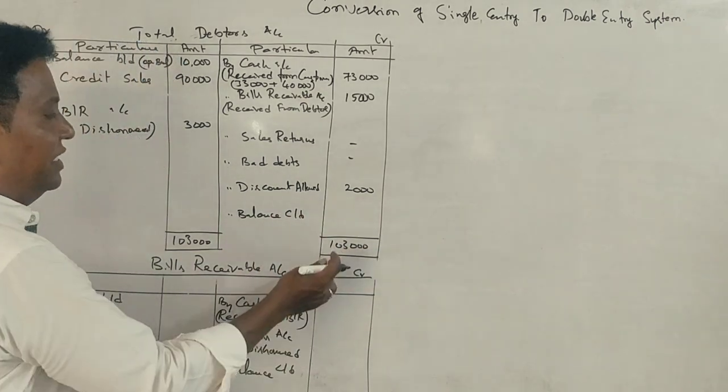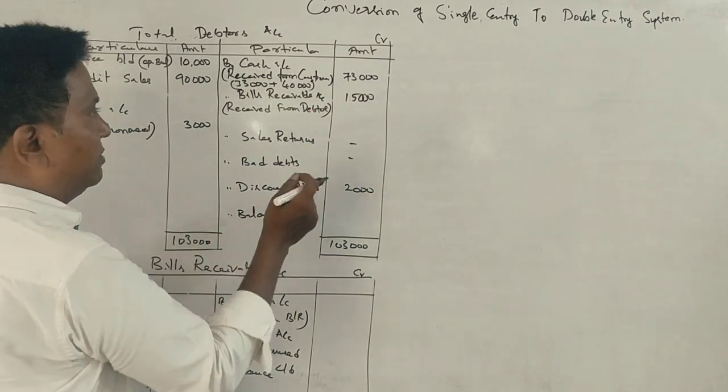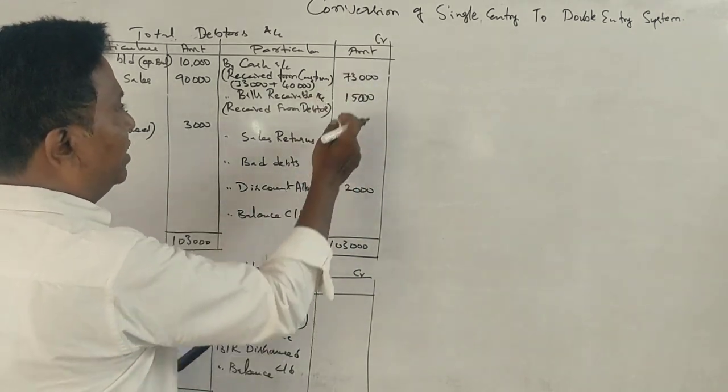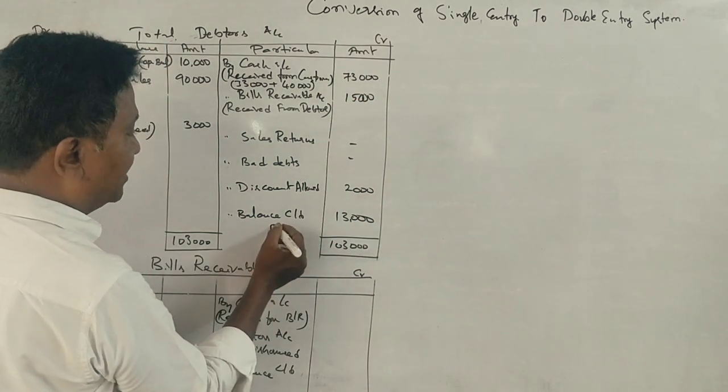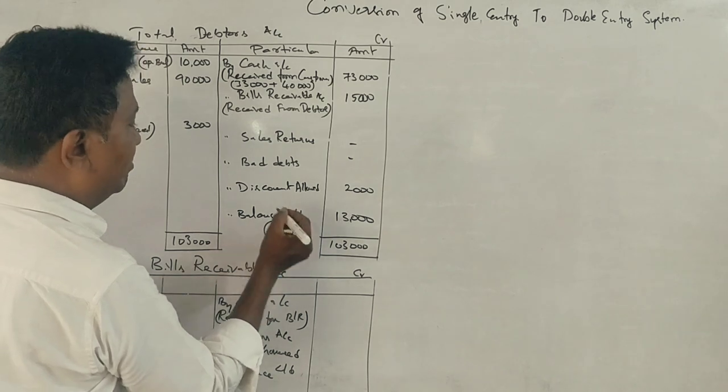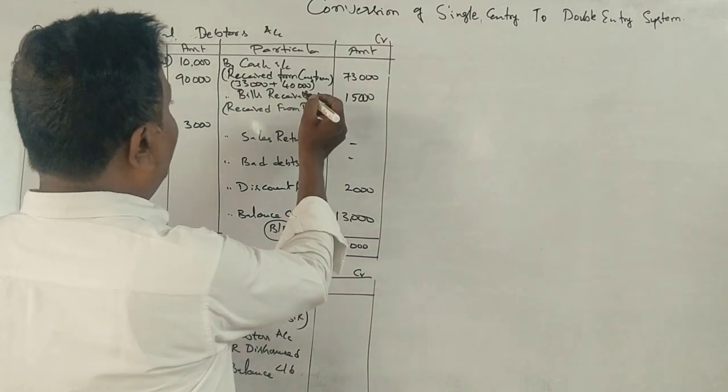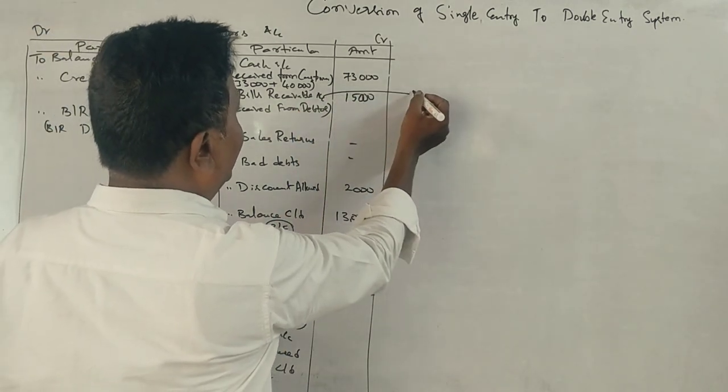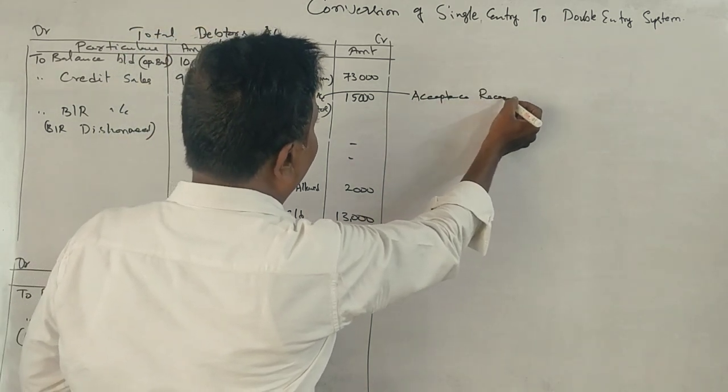1,000. Closing balance. Acceptance Receivable.